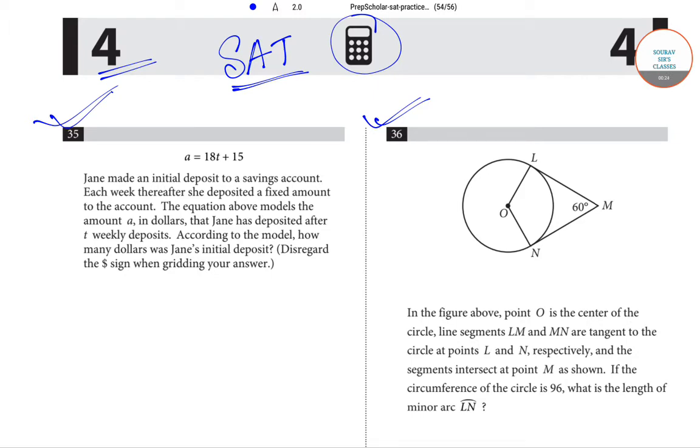First, coming to question number 35: A equals 18 into T plus 15. Jane made an initial deposit to a savings account. Each week thereafter, she deposited a fixed amount to the account. The equation A equals 18T plus 15 models the amount. A is the total amount in dollars that Jane has deposited after T weekly deposits.